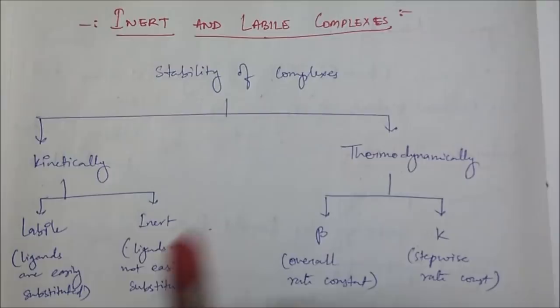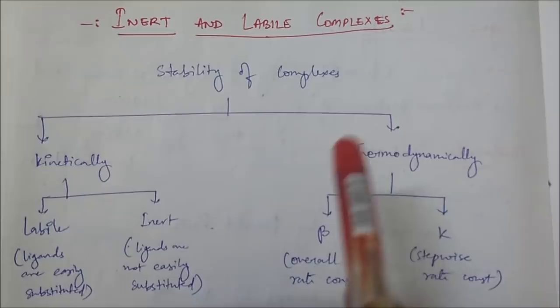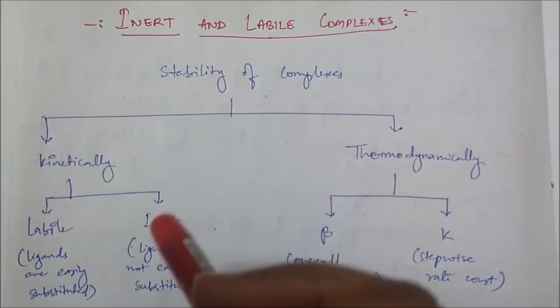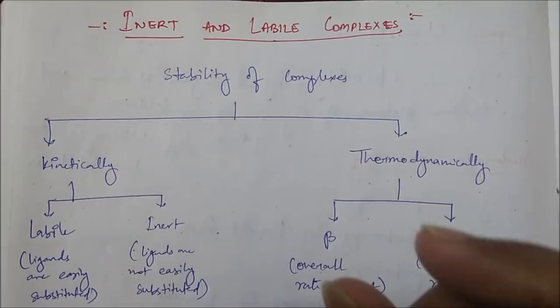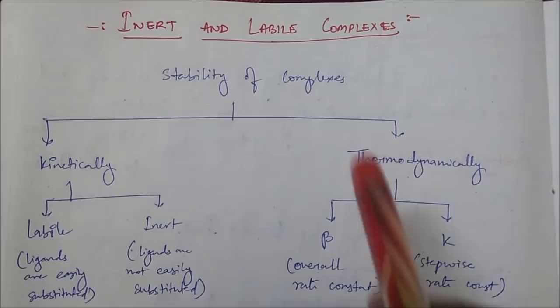Regarding stability of complexes, we have two types: complexes are either kinetically stable or thermodynamically stable. Kinetically stable means stable during a reaction. Thermodynamically stable means it remains stable when heat is applied. Stability based on reaction is called kinetic stability, and stability based on heat is called thermodynamic stability.